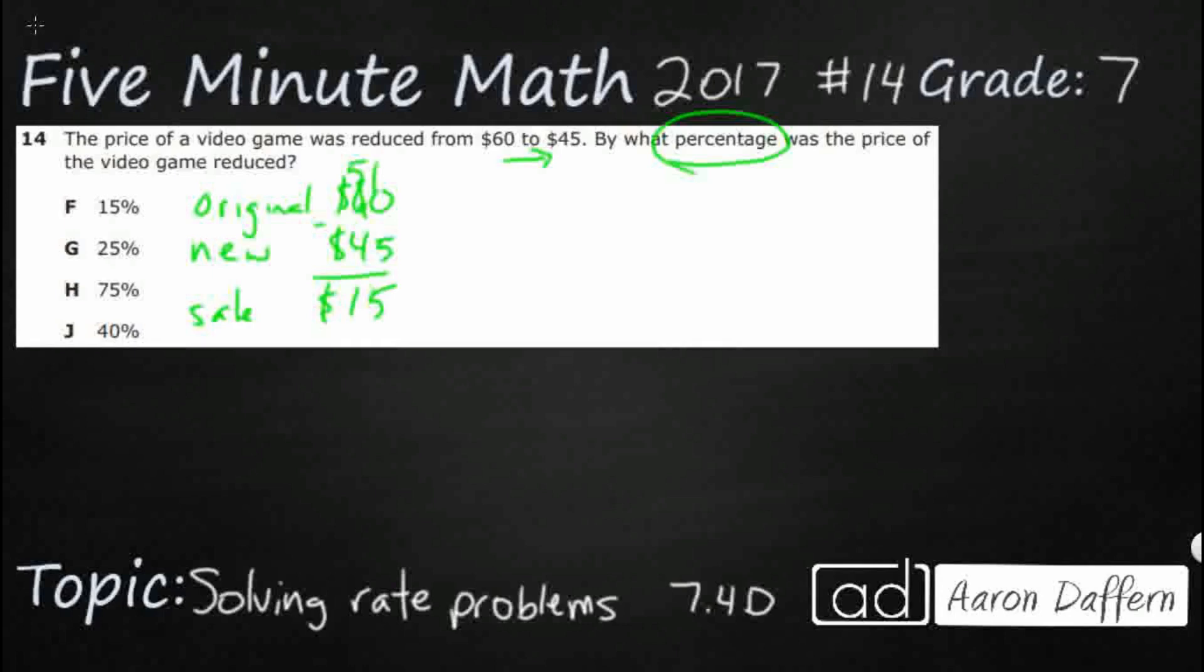And if you want to find the percentage that it was reduced, well, that's a pretty simple way of you make a fraction of your sale price over the original. So our sale price was $15, and we took $15 off an original $60. So we can actually divide both by 15.